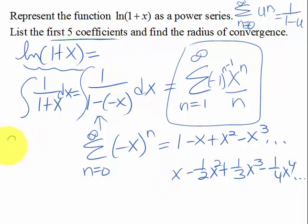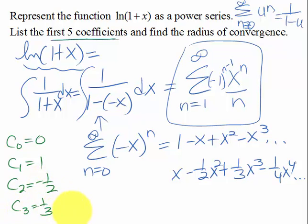So let's go ahead and express our first five coefficients. Our c0 was 0, c1 is 1, c2 is minus 1 half, c3 is 1 third, and c4 is minus 1 fourth.